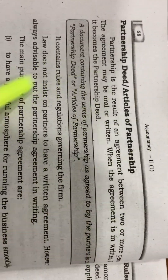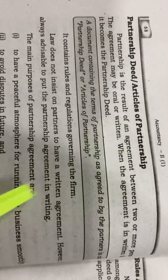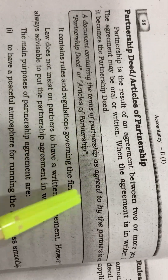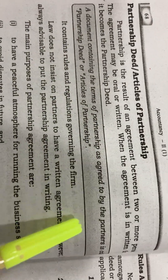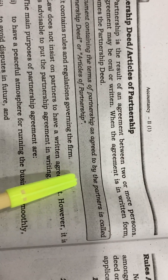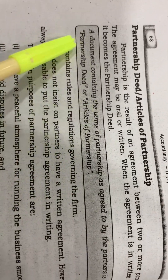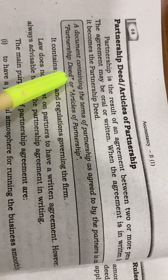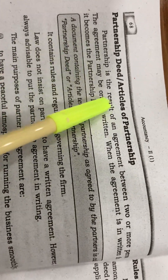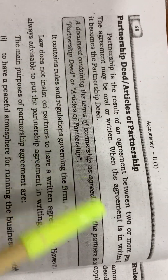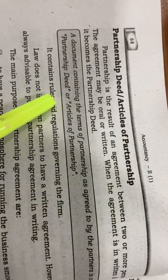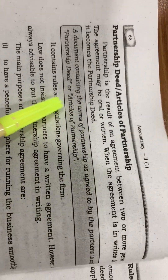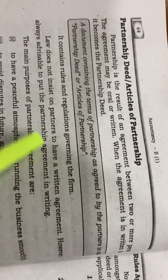What is the Partnership Deed? A document containing the terms of partnership as agreed to by the partners is called Partnership Deed or Articles of Partnership. So the Partnership Deed is a document that has all the terms and conditions.